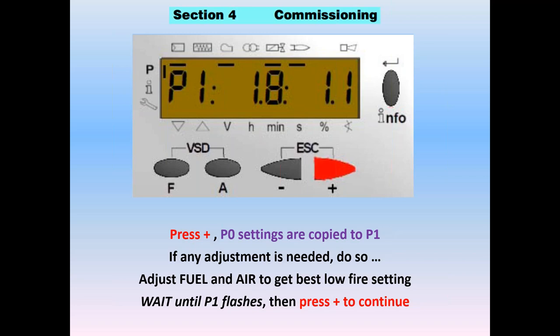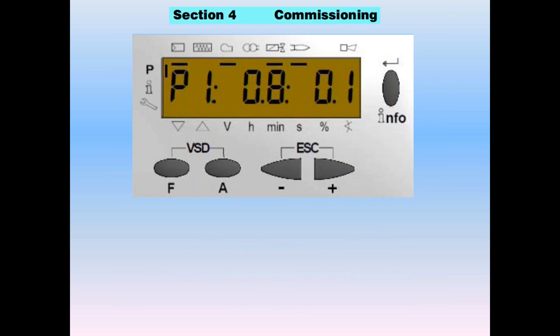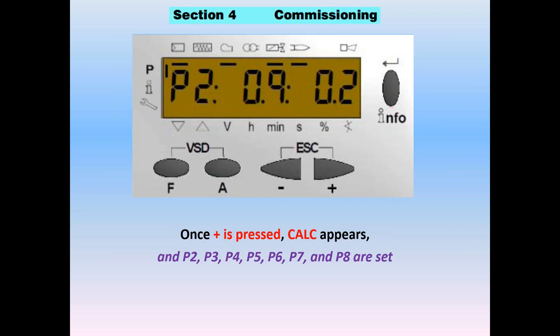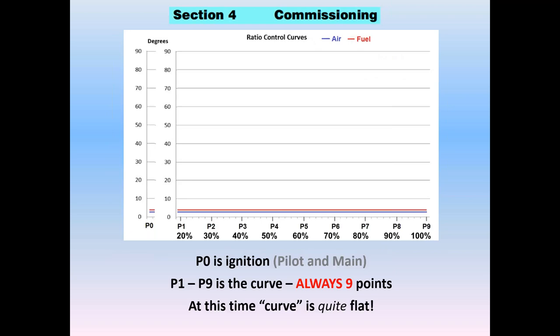Once you get to P1, you may want to dial this down so that when you release to modulate, you get the full benefit of the turndown of the burner. Whatever your maximum turndown is, that's what you set for P1. Once you have settings of P1 in, press plus. A 'calc' will appear — it has now calculated P2, 3, 4, 5, 6, 7, and 8 in a straight line to the P9 you already had. So P2 is virtually the same because we have a very flat curve. P0 is the ignition settings, P1 was the same with minor changes, P9 was our initial flat settings.